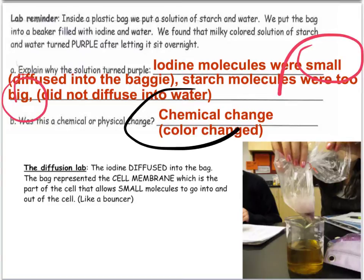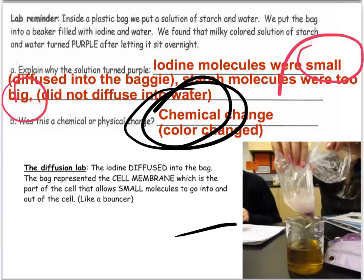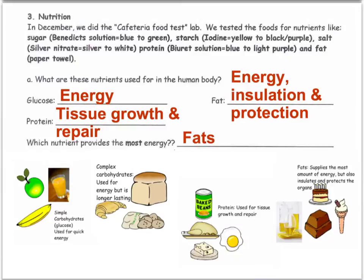This isn't in your packet, but write down somewhere that this was a chemical change — that's important. There's a nice picture of the experiment. Glucose and other nutrients are used for specific functions in the human body.